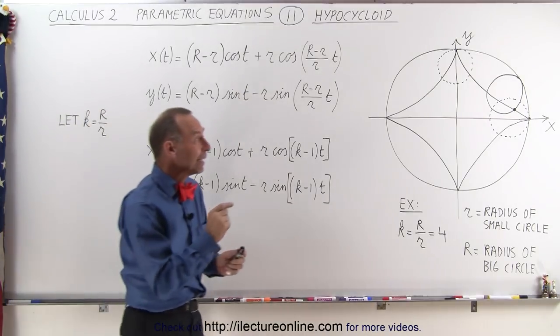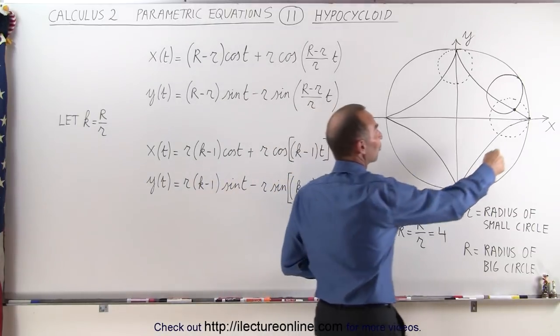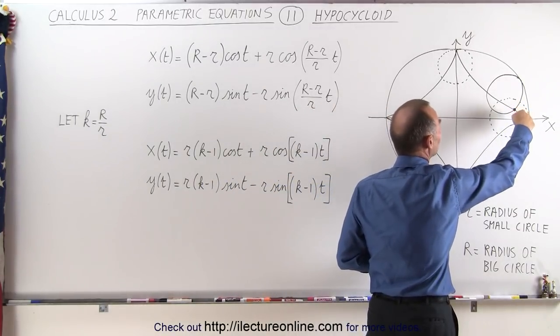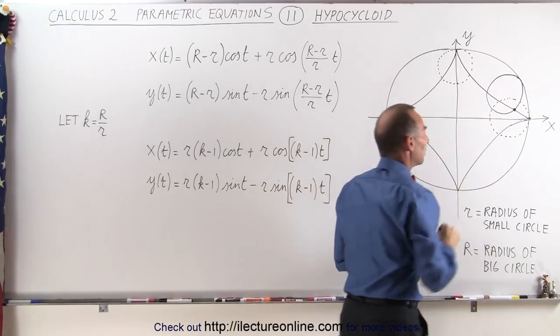The difference is that here with the hypocycloid we have a small circle or a small wheel that's rotating inside a big wheel.